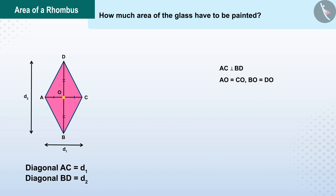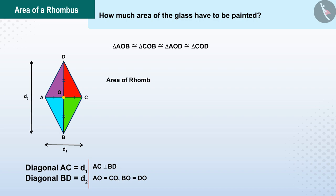As we know that rhombus ABCD is made up of four congruent triangles AOB, COB, AOD and COD. Therefore the area of the rhombus ABCD is equal to the sum of the area of the triangles AOB, COB, COD and AOD.